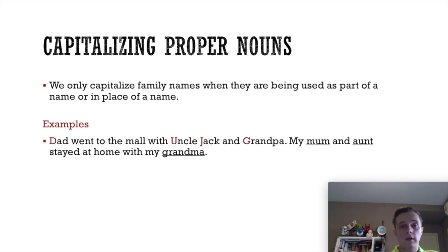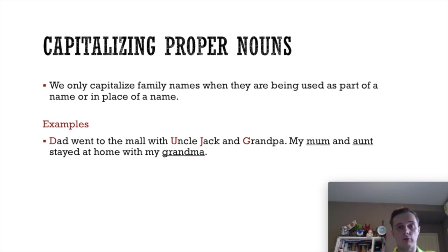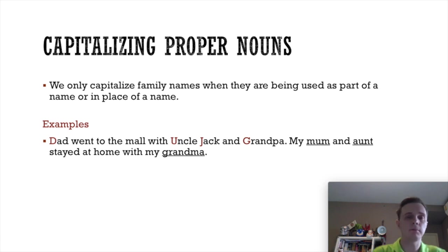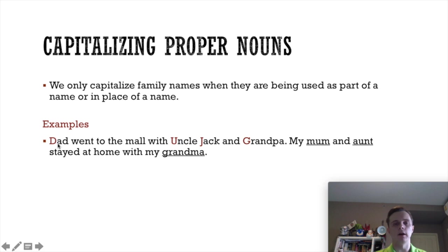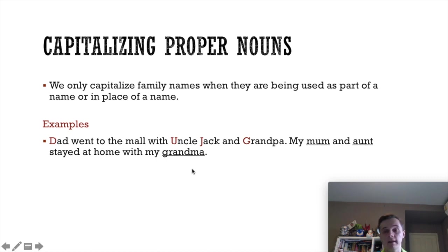You also know that we can use family names in place of a person's name. Sometimes we use them as a name, and sometimes just to describe the relationship. It's important that you only capitalize a family name when it's being used as part of or in place of a name. For example: "Dad went to the mall with Uncle Jack and Grandpa" — Dad, Uncle Jack, and Grandpa are used as names, so they're capitalized. But "my mum and aunt stayed at home with my grandma" — those are just describing the relationship, not used as names, so they are not capitalized.